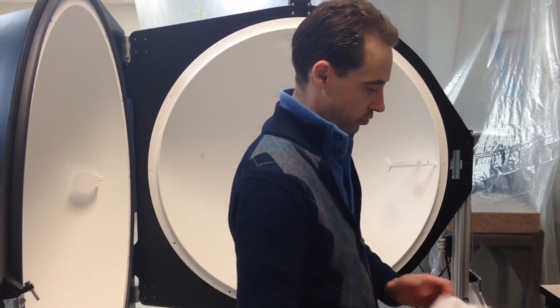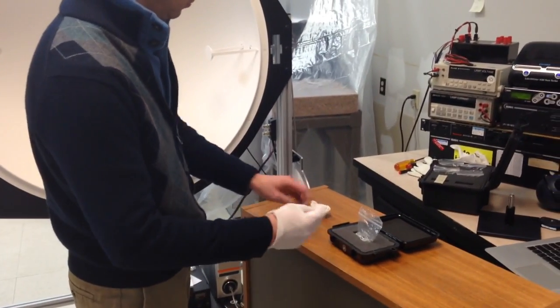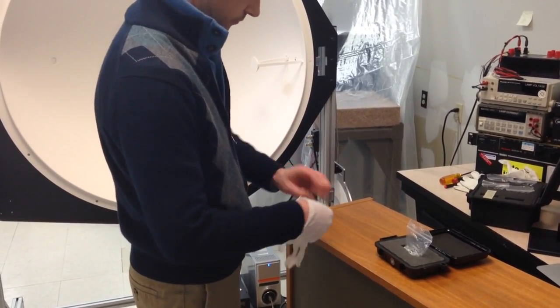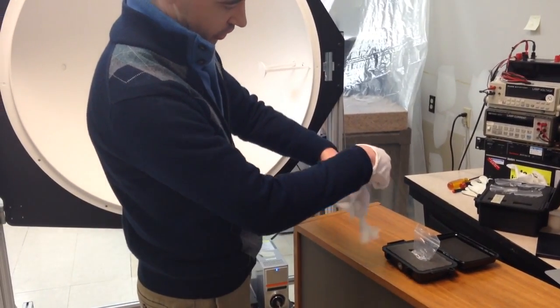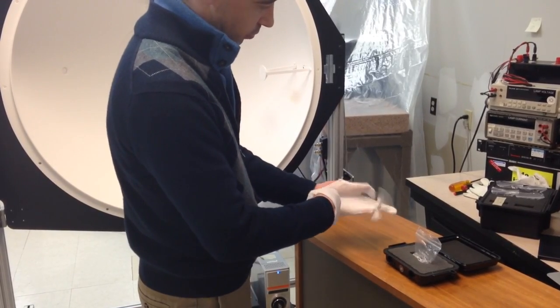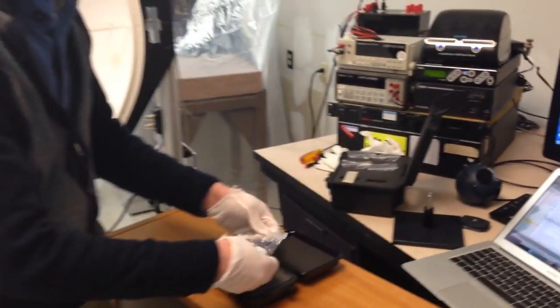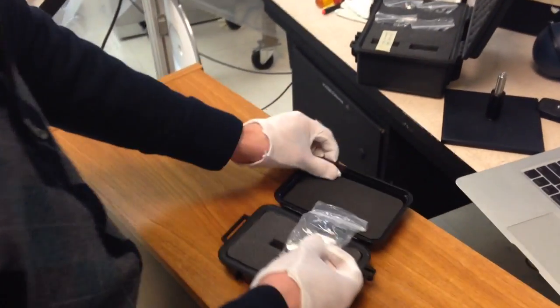So the first thing that we want to do is we want to put on our gloves. And these are very expensive calibration lamps, and they can also be sensitive to oils on the skin. So we want to be careful when we handle these and store them in their containers.